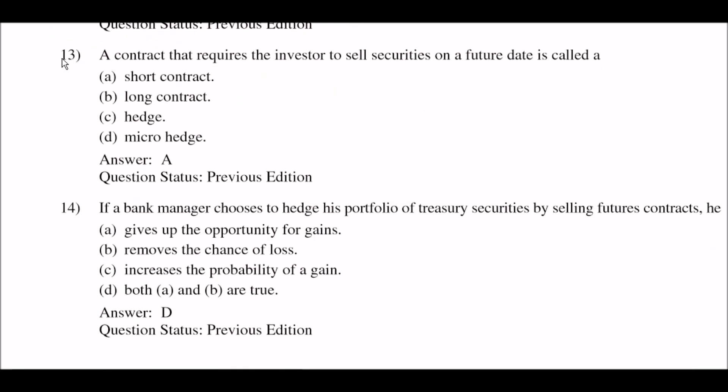Next question: a contract that requires the investors to sell securities on a future date is called — option A: short contract; option B: long contract; option C: hedge; option D: micro hedge. The right answer is option A: short contract.